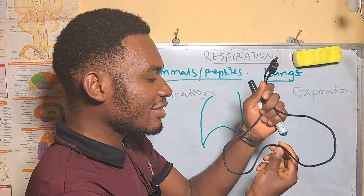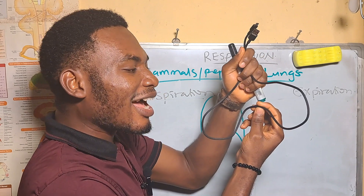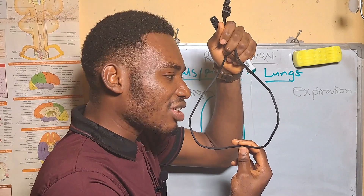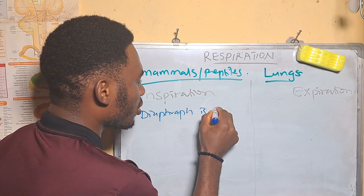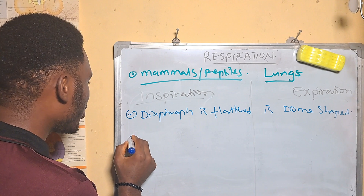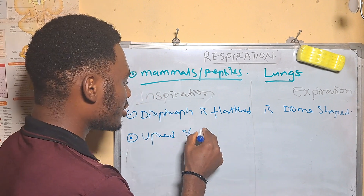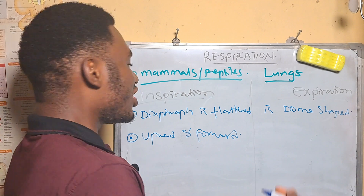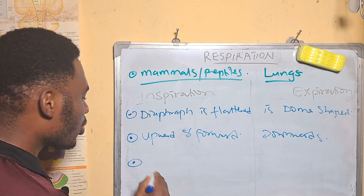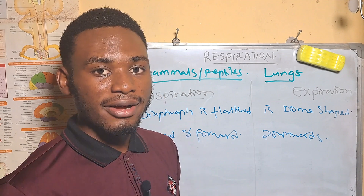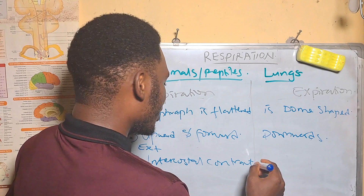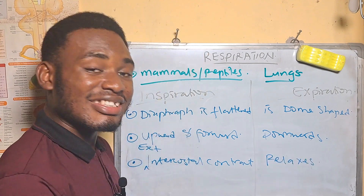Once the volume of the thorax increases, more oxygen rushes inside. So in inspiration the diaphragm is flattened, but in expiration it reverts back to the dome shape. Also in inspiration, the thoracic cavity moves upward and forward, which is reversed in expiration — it moves downward. Additionally, the intercostal muscles help with breathing: during inspiration the external intercostal muscles contract, while during expiration the external intercostal muscles relax.